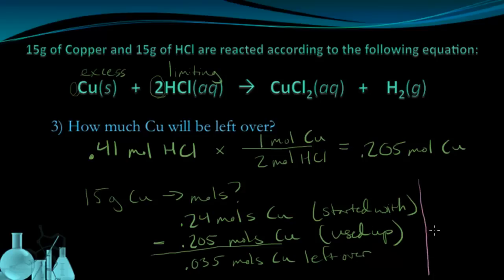Now I can multiply this by the formula mass of copper, which is 63.5 grams per mole, to get the total mass of this remaining copper, which ends up being 2.22 grams of copper. So of the 15 grams of copper that I started with, after the reaction has completely gone through and used up all of the limiting reagent, I'll have 2.22 grams of copper left over.